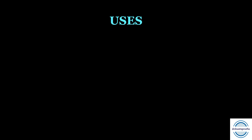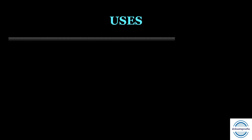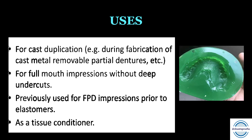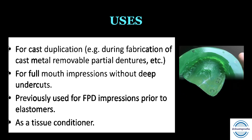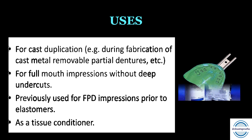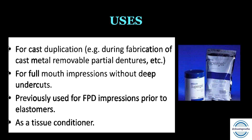Agar as an impression material has been largely replaced by alginate and rubber base materials. At present it is mainly used for cast duplication during the fabrication of cast metal removable partial dentures. It can be used for full mouth impressions without deep undercuts. Previously it was used for fixed partial denture impressions also, but it has been replaced by elastomers. It is also used as a tissue conditioner.